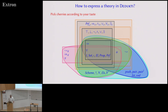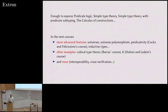Those were the easy cases: predicate logic, simple type theory, simple type theory with predicate subtyping, and the calculus of constructions. In the next courses you will see more advanced features: universes, universe polymorphism, and predicativity in Jesper's and Tiago's course tomorrow.